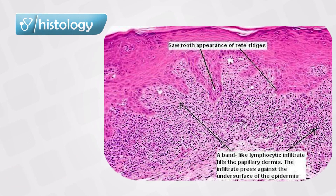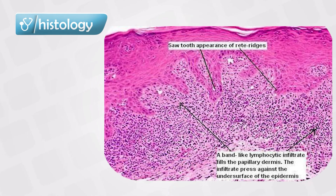If we take a sample and put it under the microscope, we will see hypergranulosis, which means that the stratum granulosum layer will be hypertrophied or hyperplastic. We will also see sawtooth infiltration of the lymphocytes at the dermo-epidermal junction, which causes separation and destruction of the basal layer.